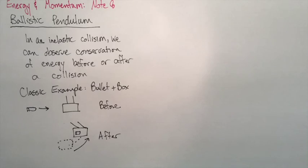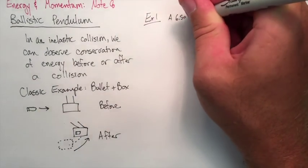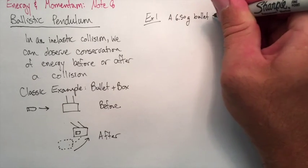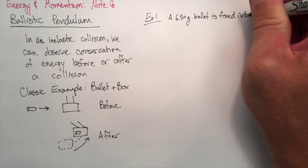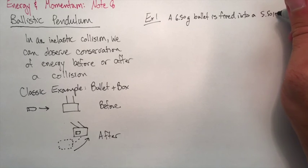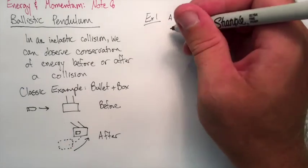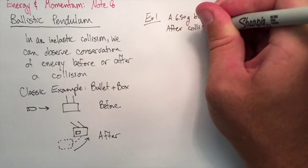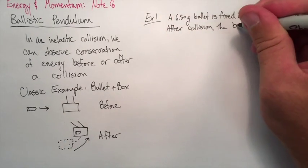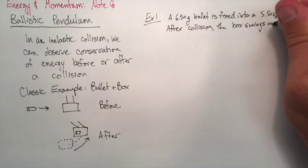Let's actually do an example about this. A 6.5 gram bullet is fired into a 5.5 kilogram box. After the collision, the box is going to swing up to a height of 10.4 centimeters. We're going to use energy and momentum to try and find the initial speed of that bullet.